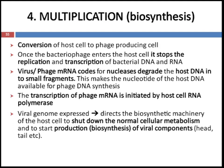The fourth stage is multiplication or biosynthesis. It is the conversion of the host cell to a phage-producing cell. Once the bacteriophage enters the host cell, it will stop the replication and transcription of bacterial DNA and RNA. The phage mRNA codes for nucleases that degrade the host cell DNA into small fragments, making the nucleotides of host DNA available for phage DNA synthesis. The transcription of phage mRNA is then initiated by host cell RNA polymerase, and viral genes get expressed, directing the biosynthetic machinery of the host cell to shut down normal cellular metabolism and start production of viral components like head and tail.